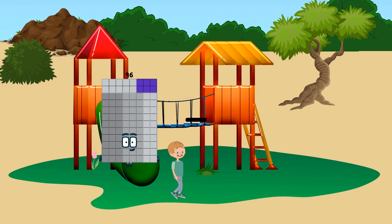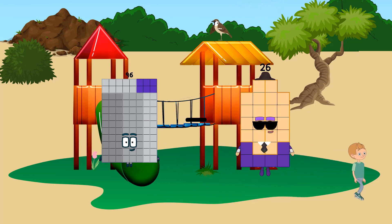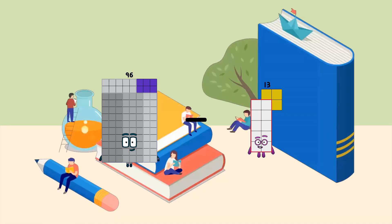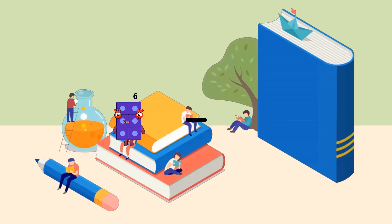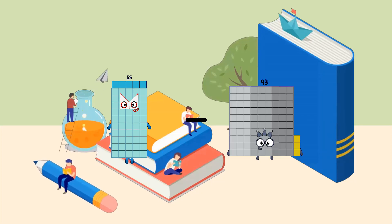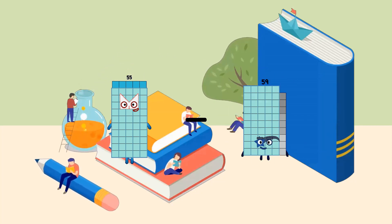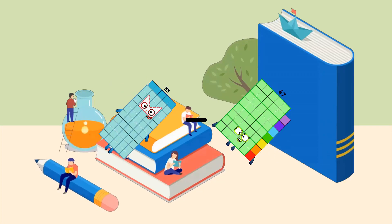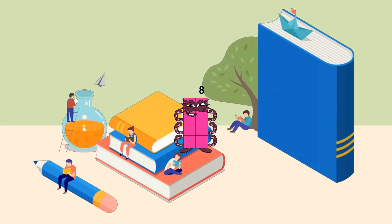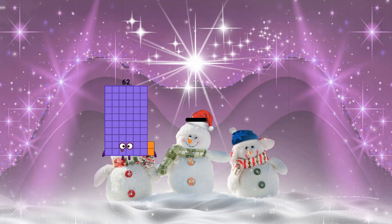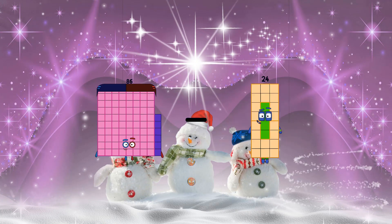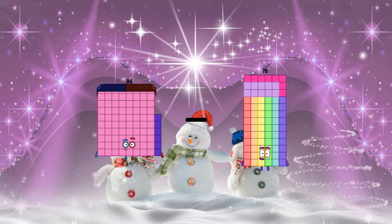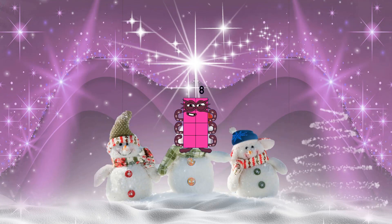96 minus 13 equals 83. 55 minus 47 equals 8. 86 minus 78 equals 8.